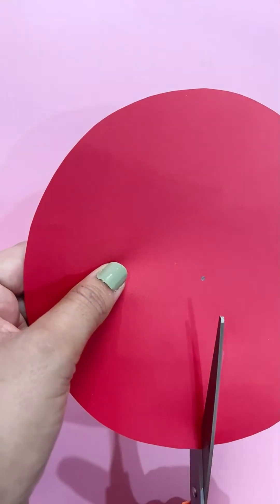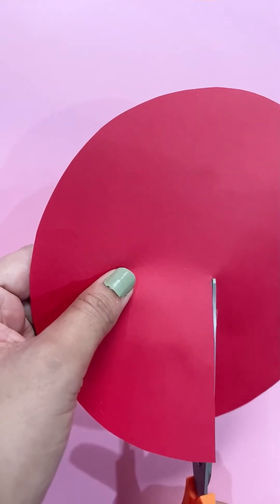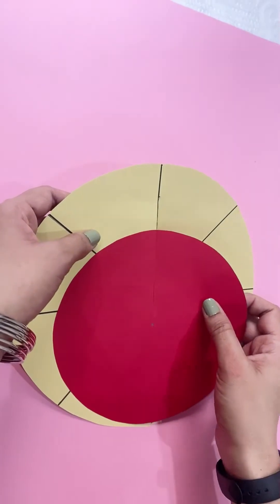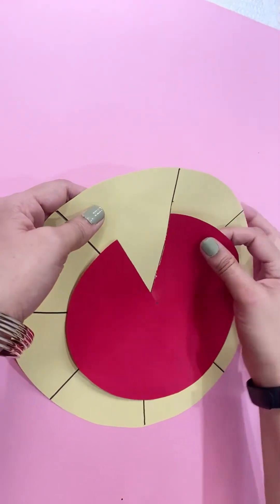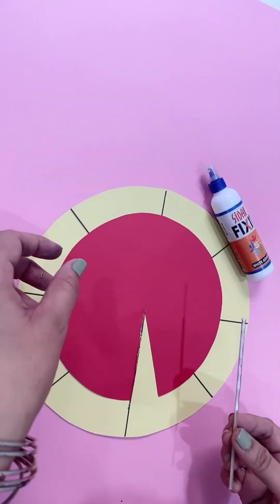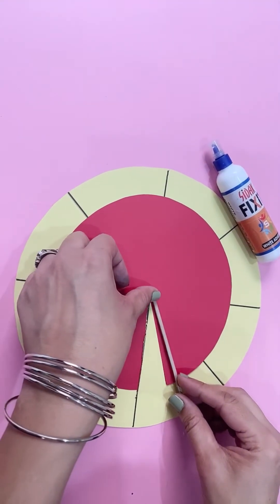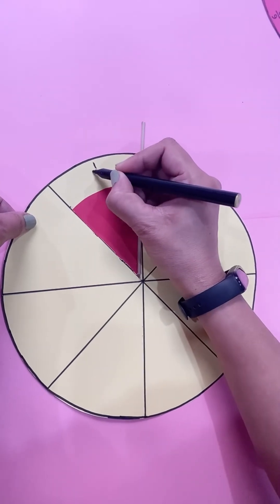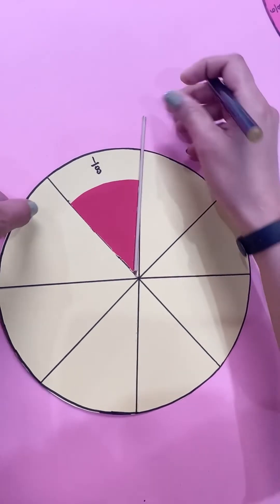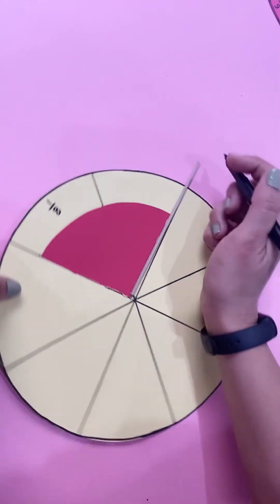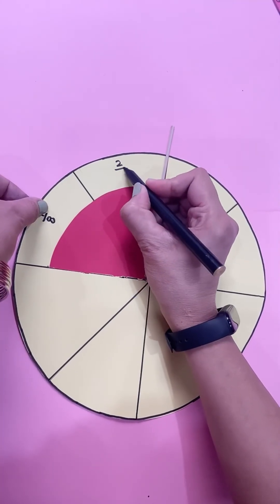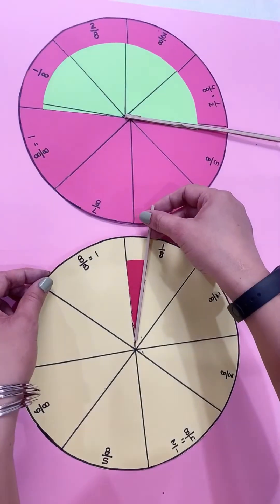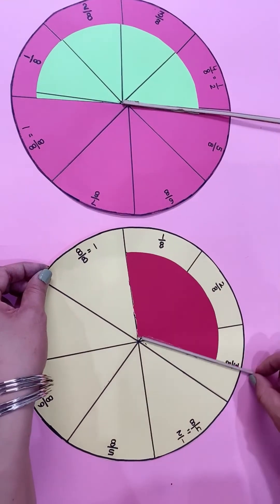Cut the small circle to the midpoint. Place and insert the small circle into the big circle. Now with the help of glue, paste a stick on the small circle. Mention all the fractions on the circle: 1/8, 2/8. Fraction wheel is ready to use. Thank you.